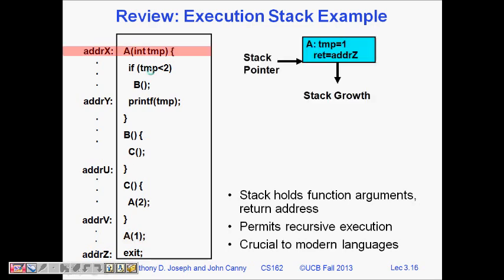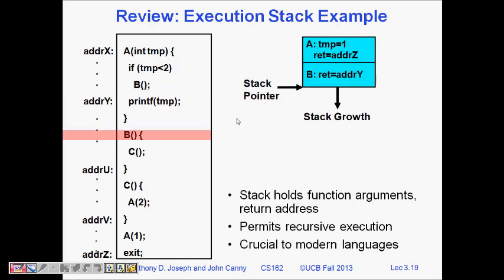Let's take one example. Here is a function example showing how the stack grows. It grows downwards. Initially it passes a function, stack pointer tells that A is the present function and the temporary value is one, return is the address. Now what happens if temp is less than two? It calls B, so now in the stack we push one more—now I'm in function B, return address is Y.